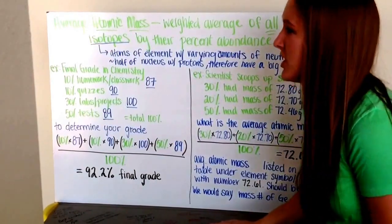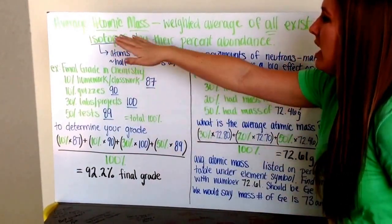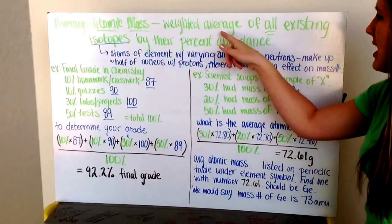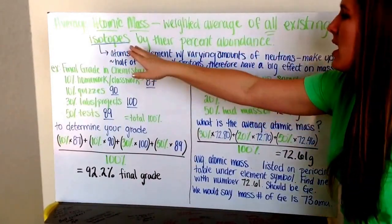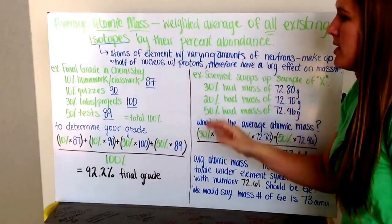This video is on average atomic mass. Average atomic mass is the weighted average of all existing isotopes by their percent abundance.